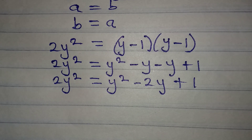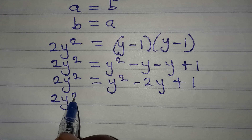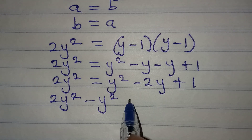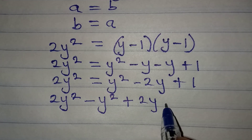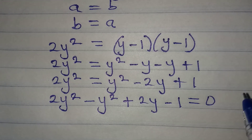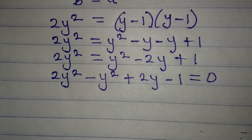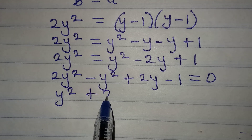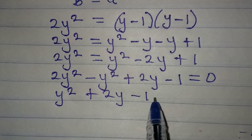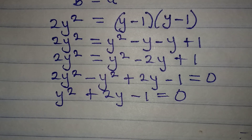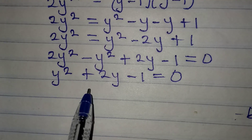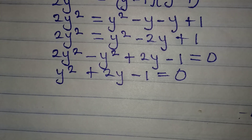The next thing I will do is bring everything to the left. So I have 2y² minus y² plus 2y minus 1 = 0. Now 2y² minus y² gives y², so we have y² + 2y - 1 = 0. This is now a quadratic equation because of the highest power of 2.